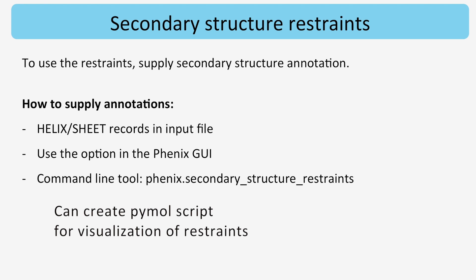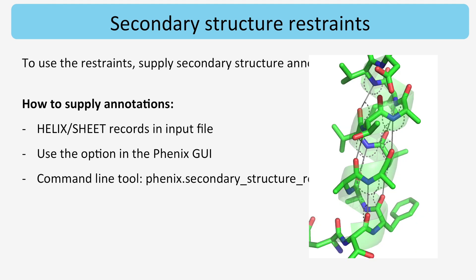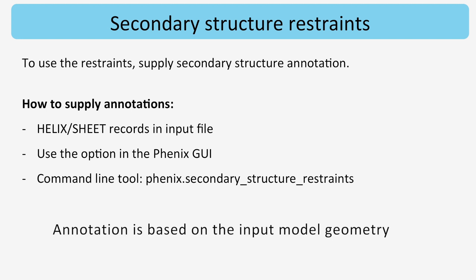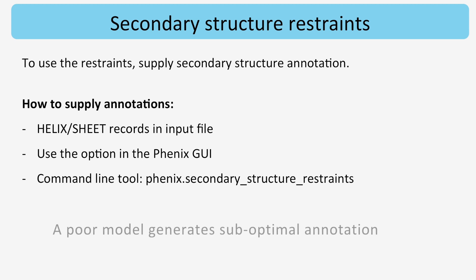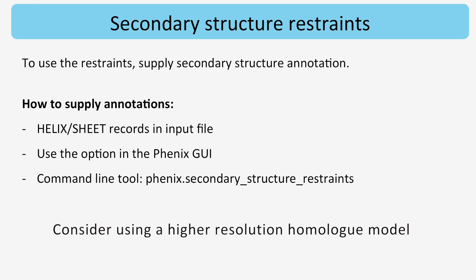There is also an option to create a PyMOL script, which allows visualization of bond and angle restraints to be applied, such as in this helix. The algorithm in the GUI and in this tool is the same. It should be noted that secondary structure annotation is based on the input model geometry, so a poor input model is likely to generate a suboptimal annotation. If a higher resolution homolog model is available, consider using it for generating the annotations.